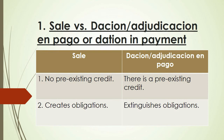Second: sale creates obligations, while Dation in Pago extinguishes obligations. So in sale, the moment the buyer and the seller come to an agreement, this will result in obligations on the part of both parties — the seller is bound to deliver and transfer ownership, while the buyer is bound to pay the purchase price. On the other hand, Dation in Pago actually extinguishes obligations. That is why it is a form of payment — in fact, a special form of payment.